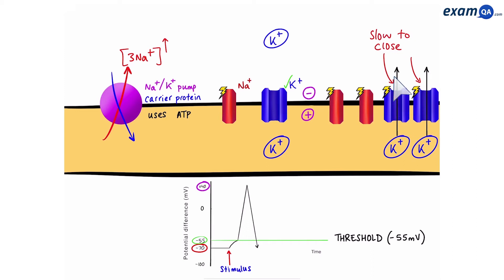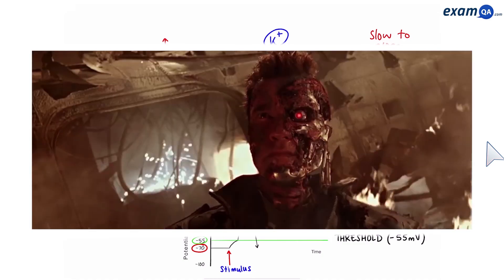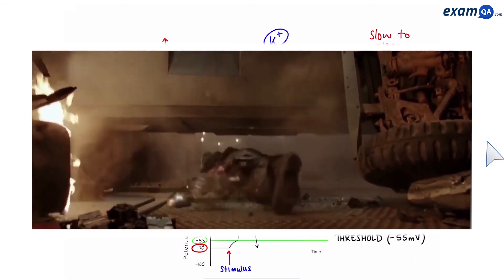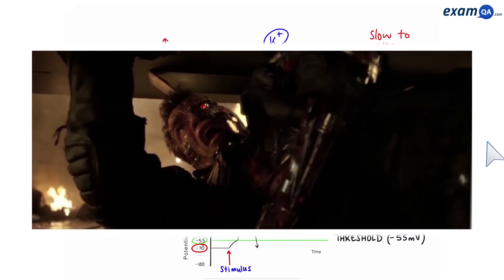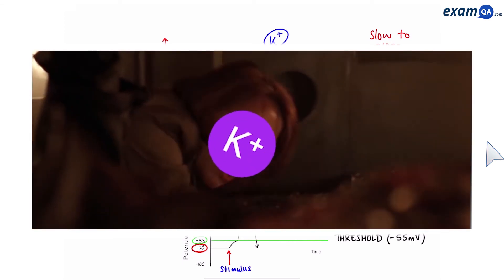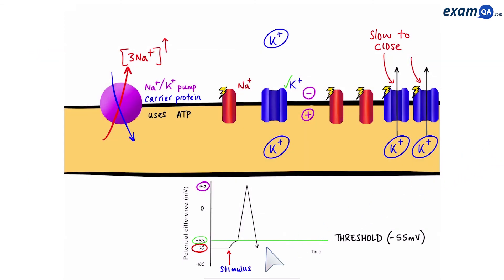However, they're quite slow. That means, while they're closing, some extra potassium ions manage to escape. Kind of like in the movies, where you have a gate that's about to close, and a character is just making its way through. So, just like that, some potassium ions make their way past the slow closing gates. So, now the charge becomes even more negative, because we've lost extra potassium ions. Eventually, the extra potassium channels have closed, and the membrane goes back to its original minus 70 millivolts.